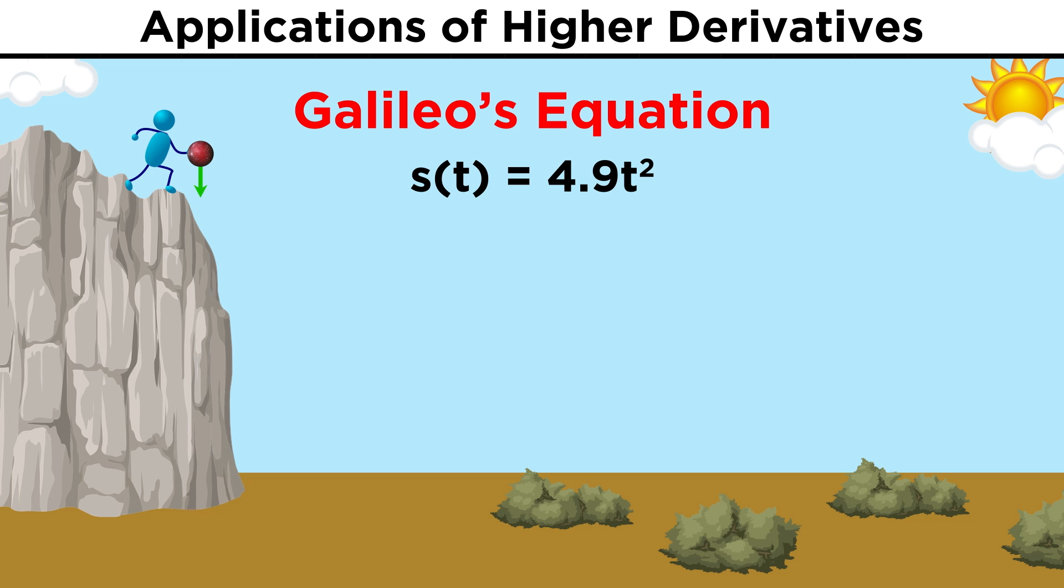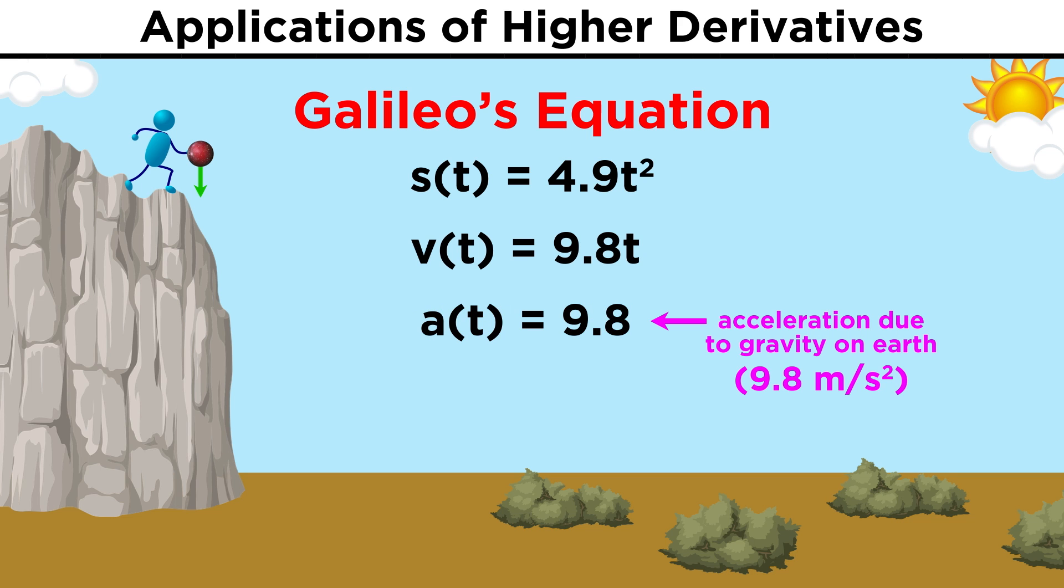This is one way of understanding the acceleration due to gravity on earth as it relates to Galileo's law for the position of an object in freefall. He derived the equation 4.9t squared by observation, and if we take the derivative of this, we get 9.8t, and if we take the derivative of that, we get 9.8, and this is why acceleration due to gravity on earth is a constant equal to 9.8 meters per second squared.